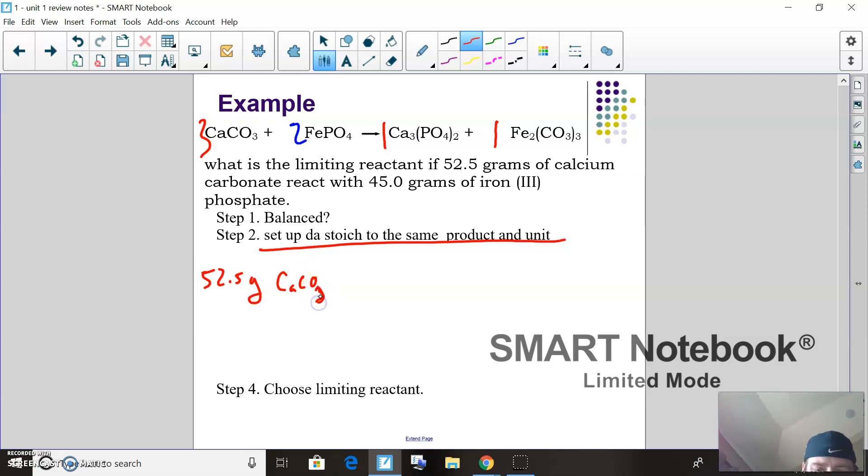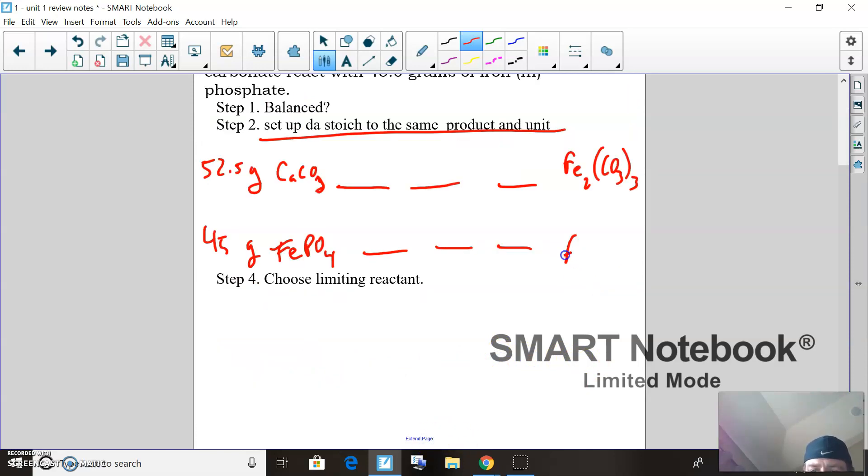I'm going to pick—let's just go to iron carbonate, arbitrarily pick that one, no reason why, just pop down. So I'm going to do stoich to that one. And then I'm going to say I have 45 grams of FePO4, go to the same iron carbonate.